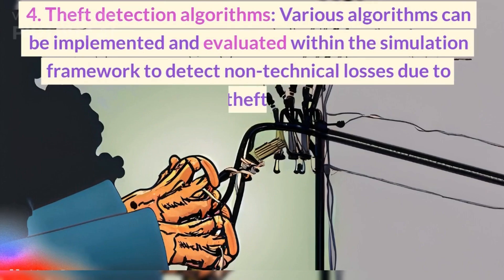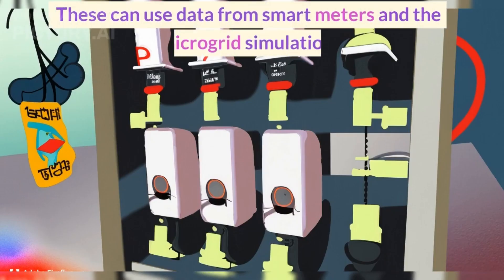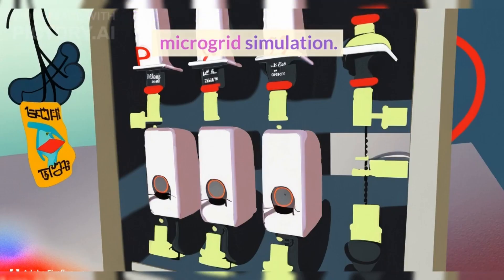4. Theft Detection Algorithms. Various algorithms can be implemented and evaluated within the simulation framework to detect non-technical losses due to theft. These can use data from smart meters and the microgrid simulation.